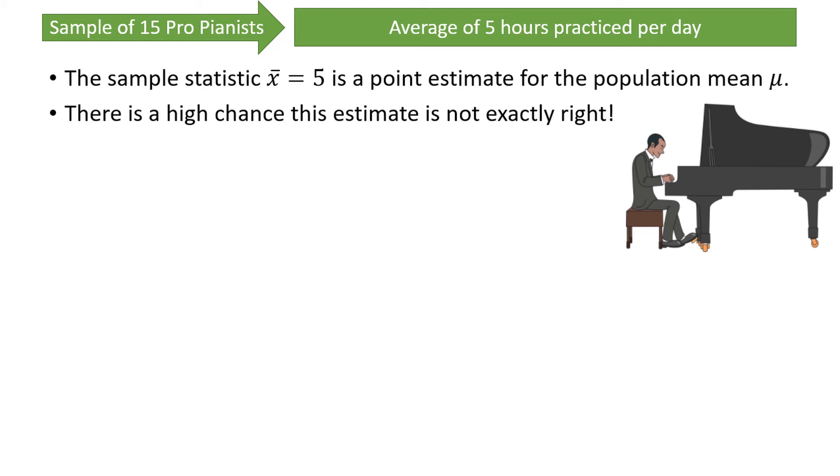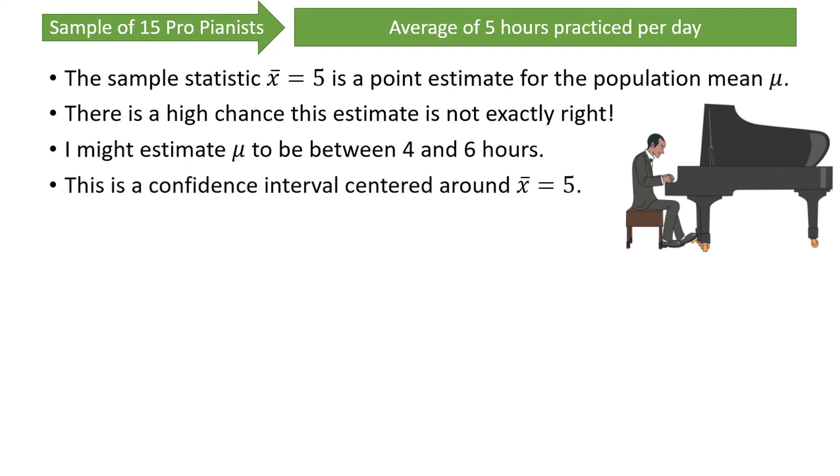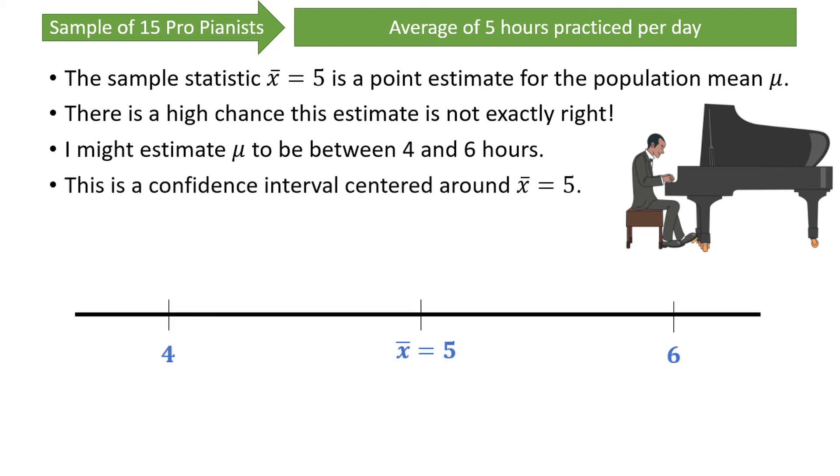For that reason, I might estimate that the population mean amount of practice time is between 4 and 6 hours for professional pianists. This is a confidence interval, which is centered around the point estimate of x-bar equals 5. The lower bound is 4 and the upper bound is 6. The margin of error is the distance from the point estimate to either the upper or lower bound, and is equal to 1 in this example.